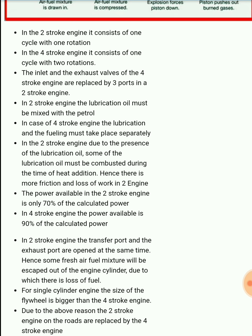The next difference is that in the four-stroke engine, lubrication and fuel are handled separately. But in the two-stroke engine they are combined, so lubrication oil also enters the combustion process, causing friction losses. That is why the power available from a two-stroke engine is about 70% of the calculated power, while in a four-stroke engine it is about 90% of the calculated power.